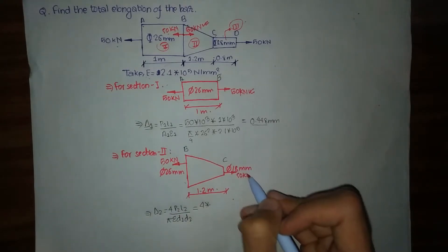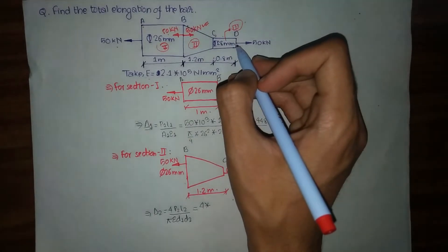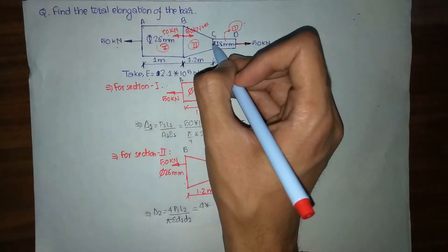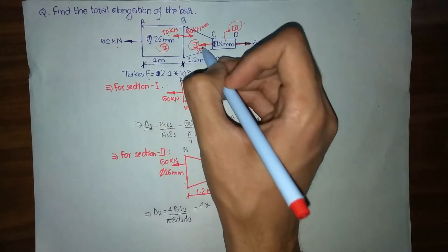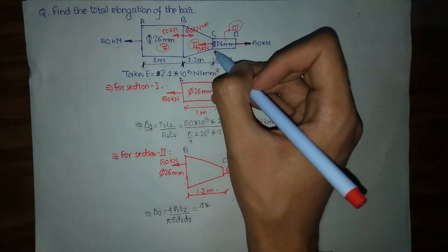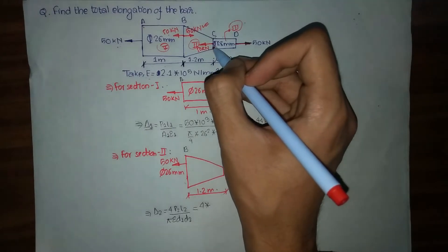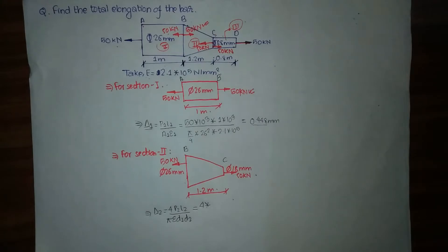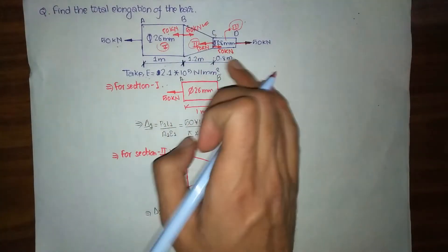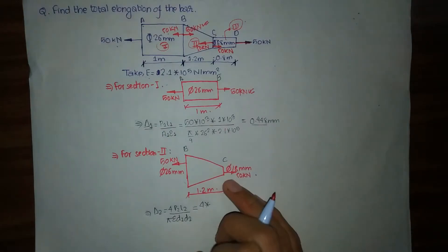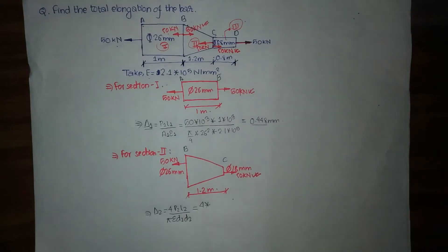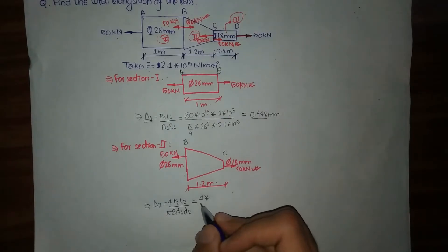For the final portion, a force of 50 kN acts at the right. In order to maintain equilibrium, a force of 50 kN must act at the left. Since no external forces act at C, we suppose a force of 50 kN acting at the right, so that the 50 kN leftward and 50 kN rightward forces balance each other.